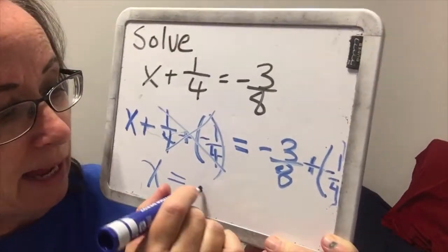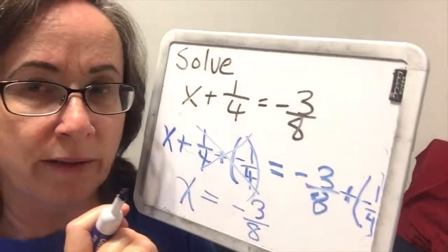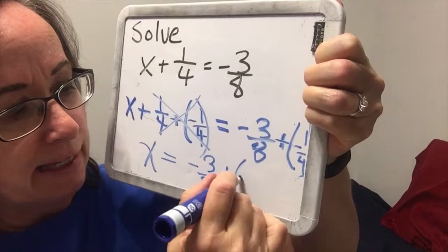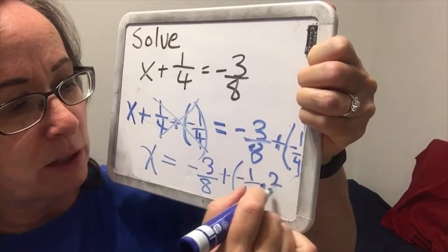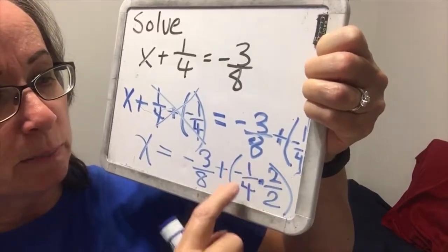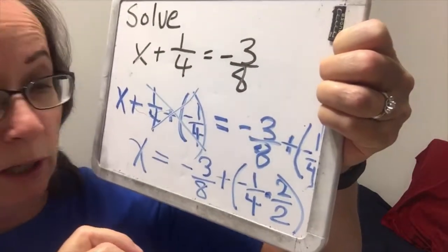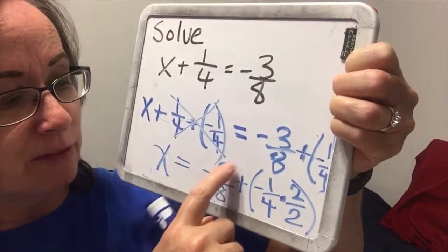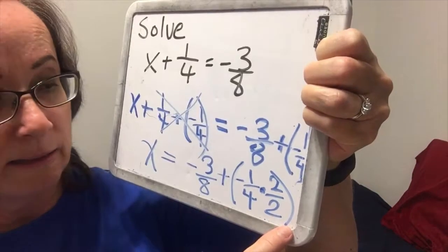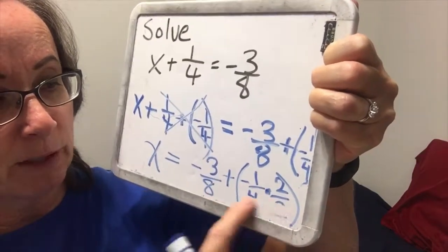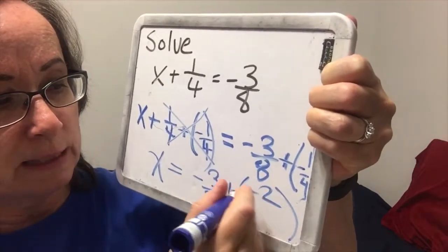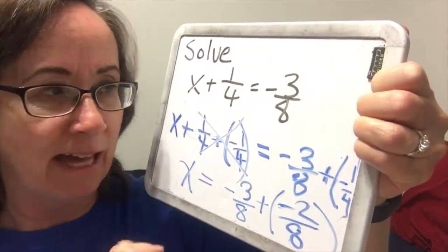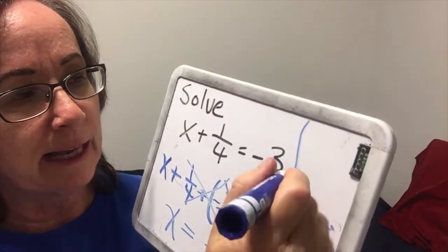Now I have a little problem. I have negative 3 eighths, but negative 1 fourth and negative 3 eighths don't have the same denominator. So I'll write negative 1 fourth and multiply by 2 over 2 — since 2 over 2 is 1, this keeps the same value but now gives a common denominator of 8. So we've got negative 3 eighths and negative 2 eighths. Since negative 1 fourth equals negative 2 eighths, we have negative 3 eighths plus negative 2 eighths equals negative 5 eighths. So our answer is negative 5 eighths.